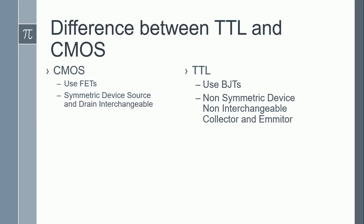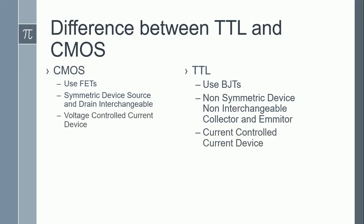The next main difference, which is often asked in interviews as well, is that CMOS is essentially a voltage-controlled current device. The current that is controlled is ID, and the voltage which controls that current is VGS.